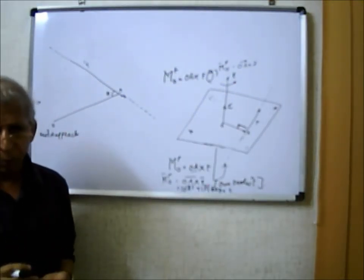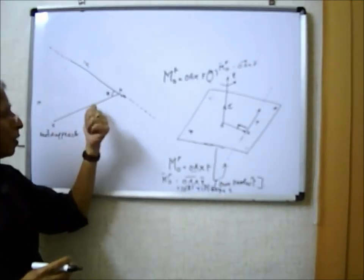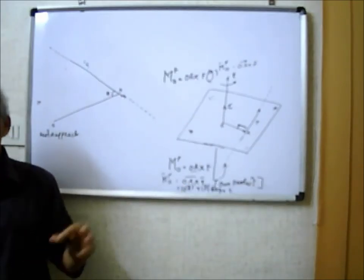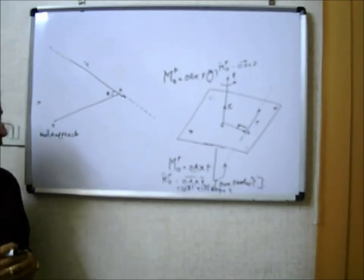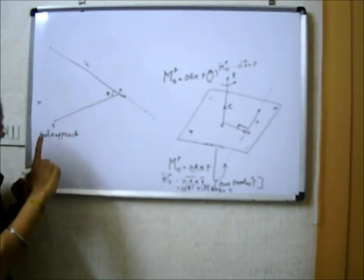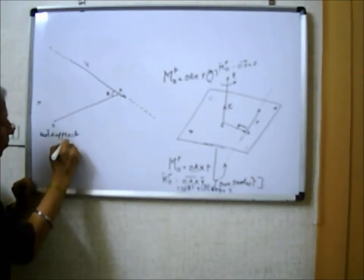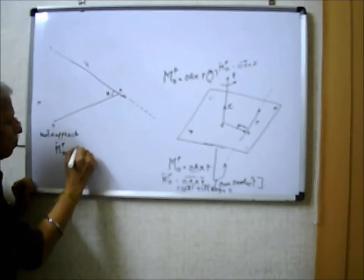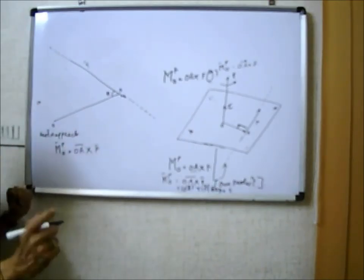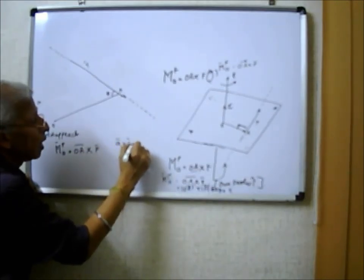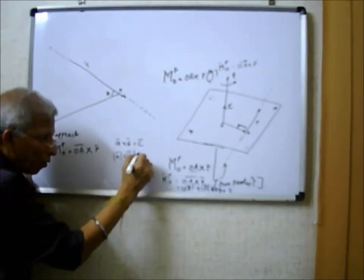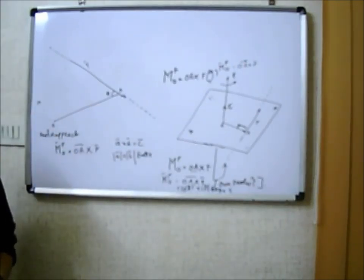In the vector approach, it is not required to specify whether the position vector OA is perpendicular to the line of action of the force. You can take the point A anywhere along the line of action arbitrarily. If O is the origin or moment center, and OA⃗ is the position vector, then the formula is: moment of F about O equals OA⃗ cross F⃗. The product of two vectors gives another vector: A⃗ × B⃗ = C⃗, defined as |A⃗| × |B⃗| × sinθ times the unit vector.